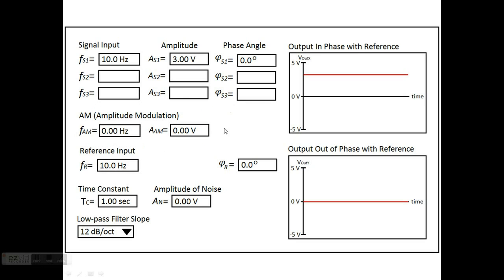Next up we have amplitude modulation. This is just the modulation of the input signal at this frequency, denoted FAM, and at an amplitude here, denoted AAM.